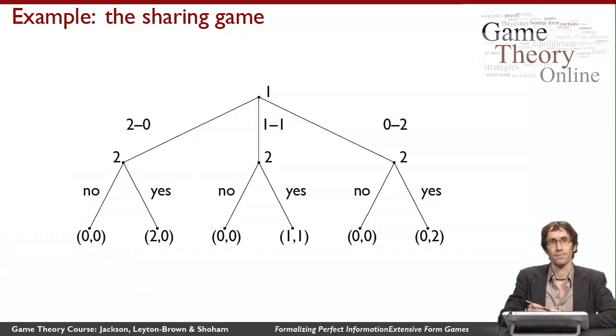Let's look at an example. This is the sharing game that talks about a situation where a brother and a sister want to decide how they're going to share $2. They have two dollar bills. It begins with the brother saying how he proposes to divide the money. He starts in this first choice node. The brother's player one.